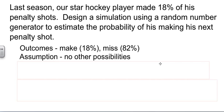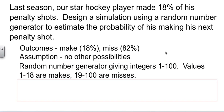They told us to use a random number generator. I'm going to set my random number generator to give me integers from 1 to 100. And I'm going to say anything from number 1 through number 18, we're going to call a make, because it said 18%. And anything from 19 to 100 is going to be a miss, because that's the rest of the values. We have random number generators in the classroom, and I'll show you how to use that when we're in class.